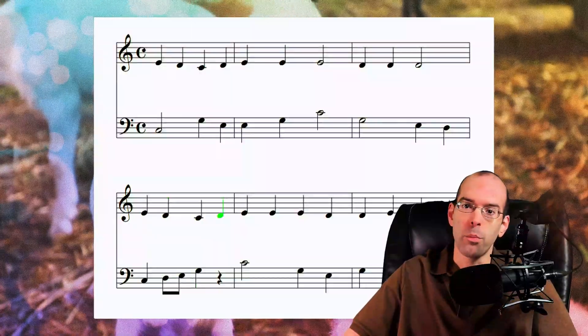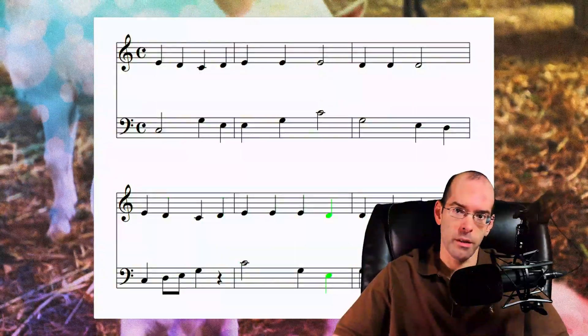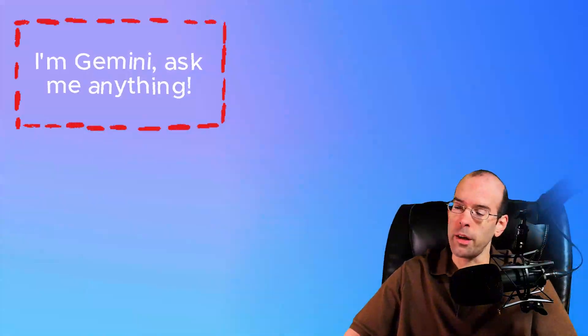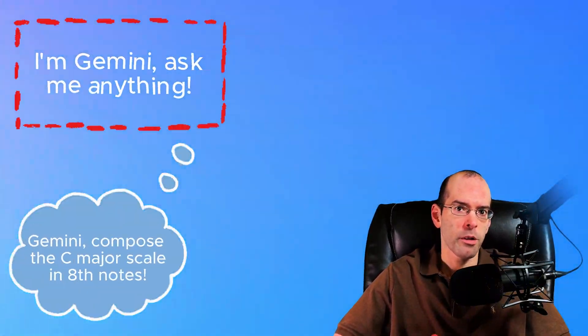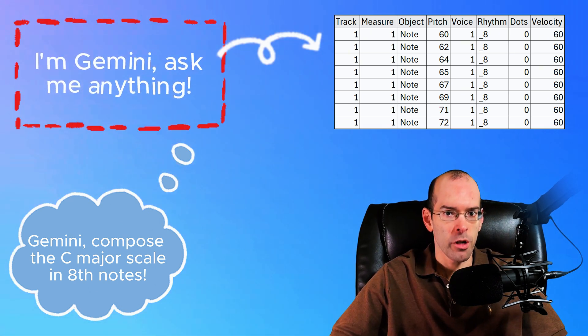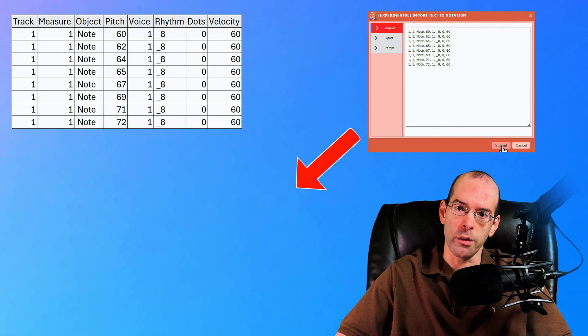Okay, not too bad, but we're going to dive into more details later. What you just saw was me typing a prompt into Gemini, which is a language AI model. Gemini returns results in a comma delimited text format, and then MusicDotter translates that into sheet music in real time.